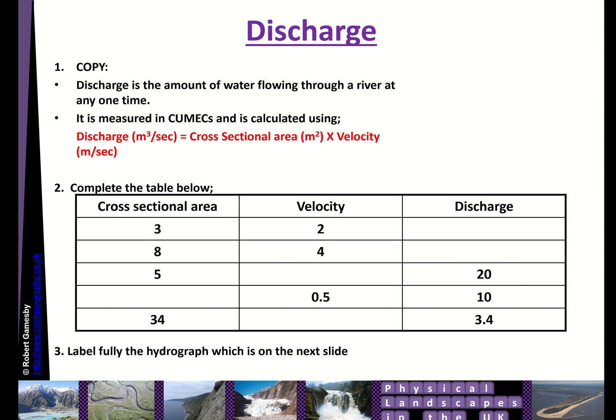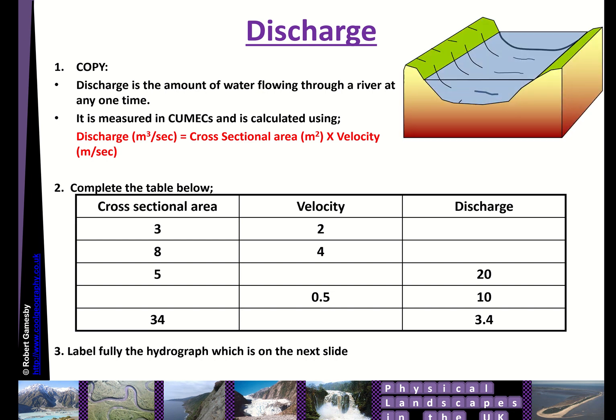To understand the concept of the hydrograph, you first need to understand discharge. Discharge is simply the volume of water flowing in any river at any one given time. So if you stood by a stream, it would be how many cubic meters of water would be flowing past you at any moment in time. So if you imagine a stream like this, to calculate the discharge, we need to know a couple of things.